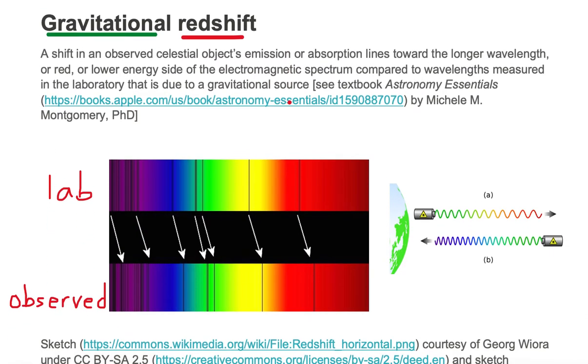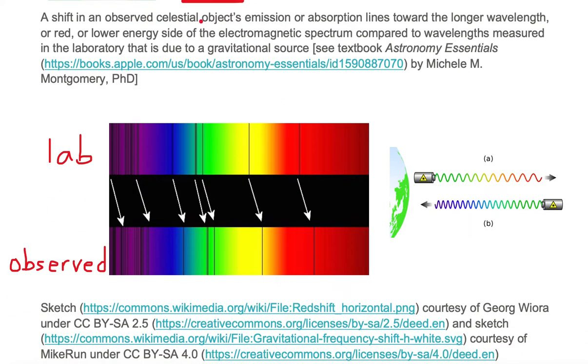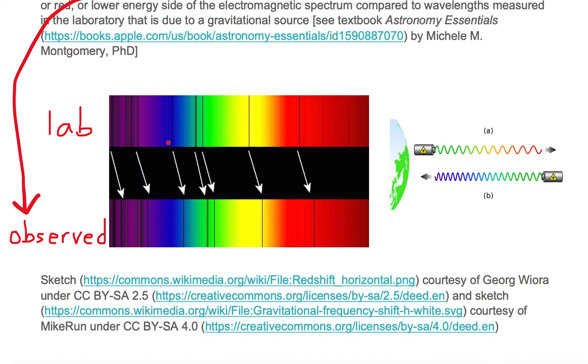It is a shift in an observed celestial object's emission or absorption lines. In this sketch we have the observed spectrum on the bottom and we have the laboratory spectrum on the top.